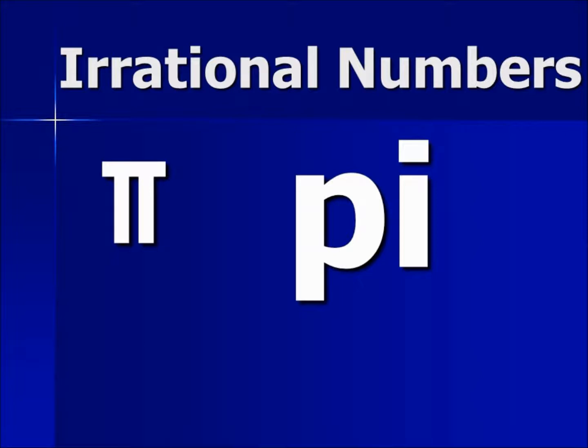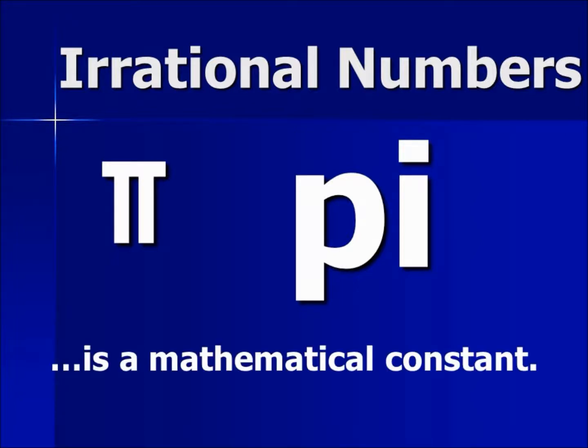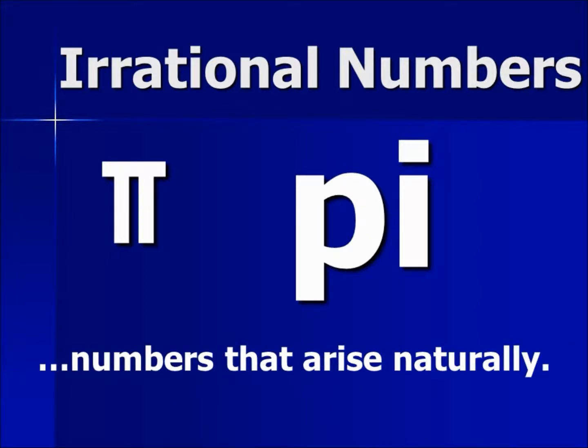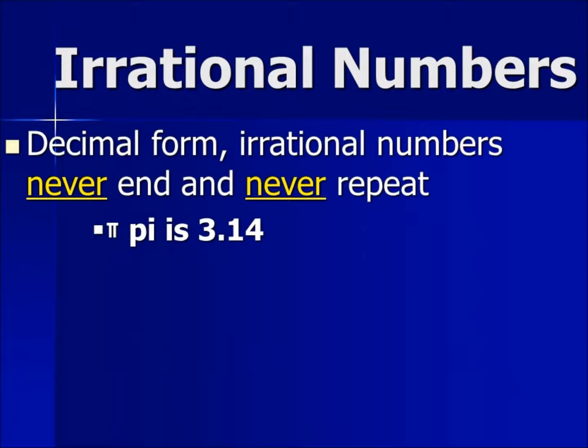Pi is an irrational number and it is also known as a mathematical constant. You may be saying, well what is a mathematical constant? Mathematical constants are numbers that arise naturally. Another characteristic of irrational numbers and pi is that in decimal form they never end and never repeat.